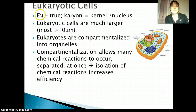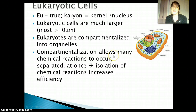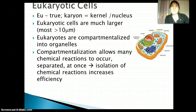The prefix 'eu' means true, and 'karyotic' has to do with 'karyon' or the kernel — so it just means 'true nucleus.' They have a nucleus. Eukaryotic cells are much larger than prokaryotic cells, and again, they have compartmentalization into organelles, which makes them much more efficient. We are eukaryotes — meaning we have eukaryotic cells. So are other animals, plants, and fungi. All those things are eukaryotic cells.